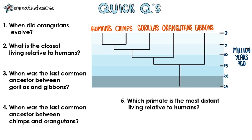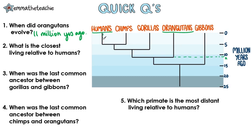One: when did orangutans evolve? So we find them, we read down until the branch splits, read across, and that looks about 11 million years ago. Two: what is the closest living relative to humans? We're looking for where it most recently branched from, and we read up and we see that it is chimps.